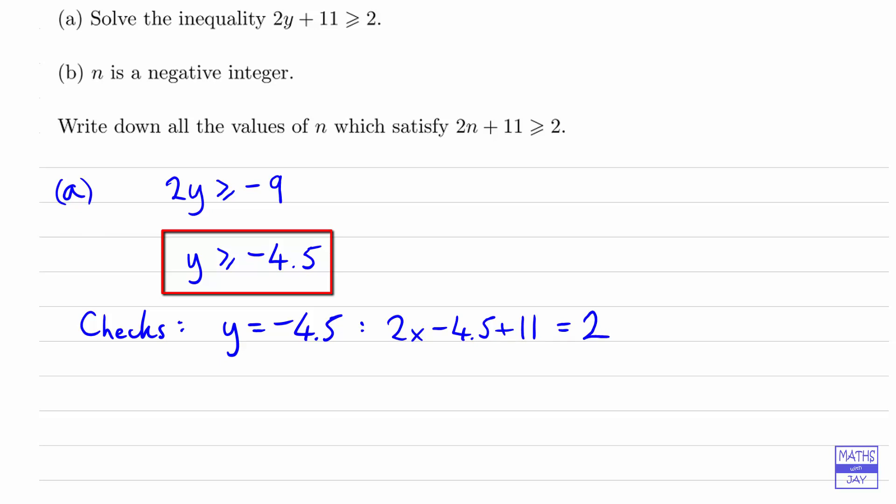Then we'll choose a value that's greater than negative 4.5. A nice easy value to choose is 0, and 2 times 0 plus 11 is 11, which is greater than 2. So that shows us that our answer is correct. So that's part A done.